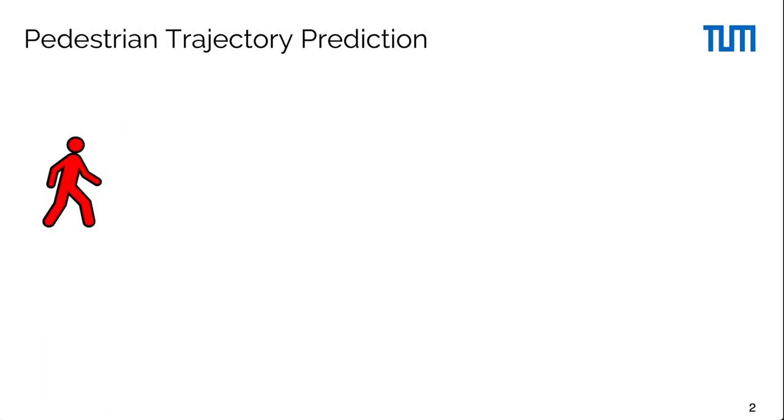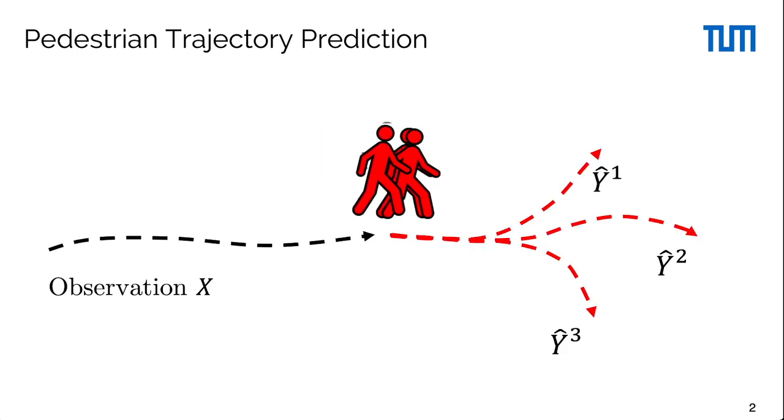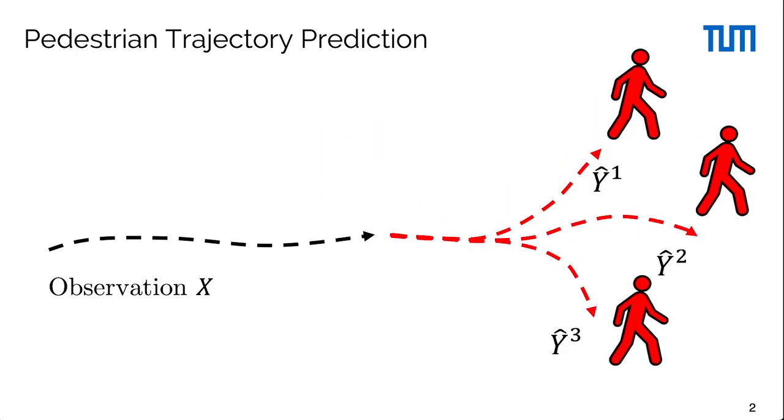In this paper, we tackle the problem of pedestrian trajectory prediction. Given the past position of a pedestrian, we aim to predict the set of possible future trajectories.